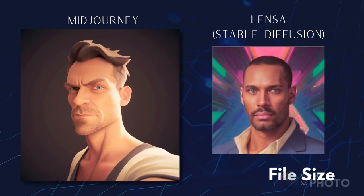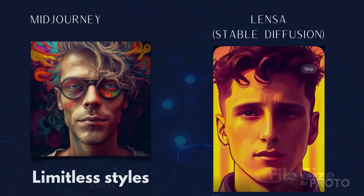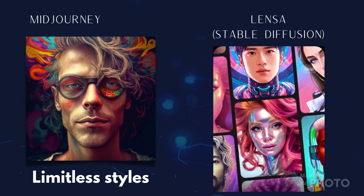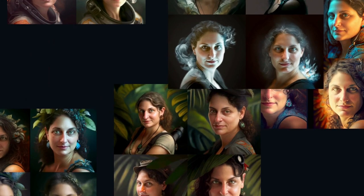Lenza's images are 1024 pixels square. Mid-journey images can be upscaled to 2048 pixels square. It's nice that Lenza hands you 100 photos in different styles. In mid-journey, you need to prompt for each style. But on the flip side, you're not limited by the styles chosen by Lenza.